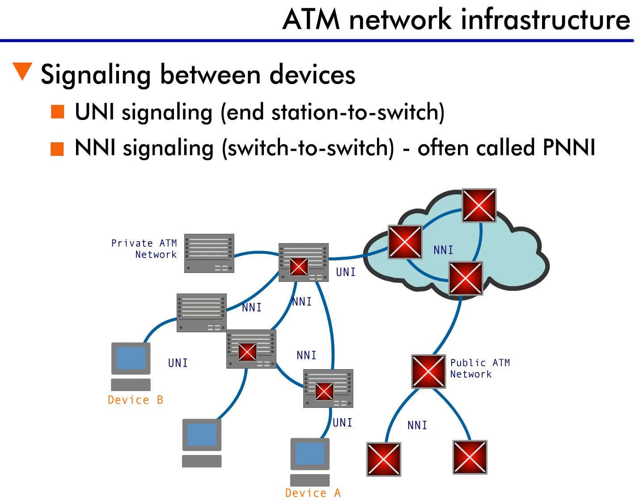Here's a large ATM network. Some of the ports are configured to communicate with UNI signaling, and other ports are configured to use NNI signaling. NNI signaling is often written as P-NNI, with the P standing for private. P-NNI is a special kind of signaling used within corporate networks.